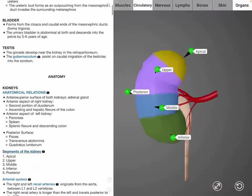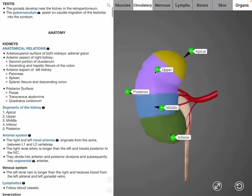As seen in the image, the kidneys are divided into five segments: the apical, upper, middle, inferior, and posterior segments.